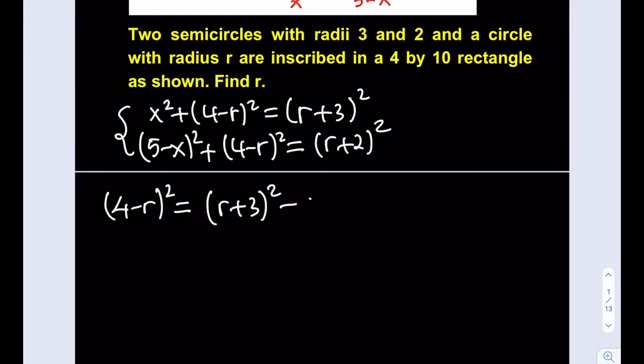What is nice about this system is that even though they're both quadratic, they have the same term, 4 minus r squared. So what I'm going to do is I'm going to isolate 4 minus r squared from both of the equations, and then set them equal to each other.